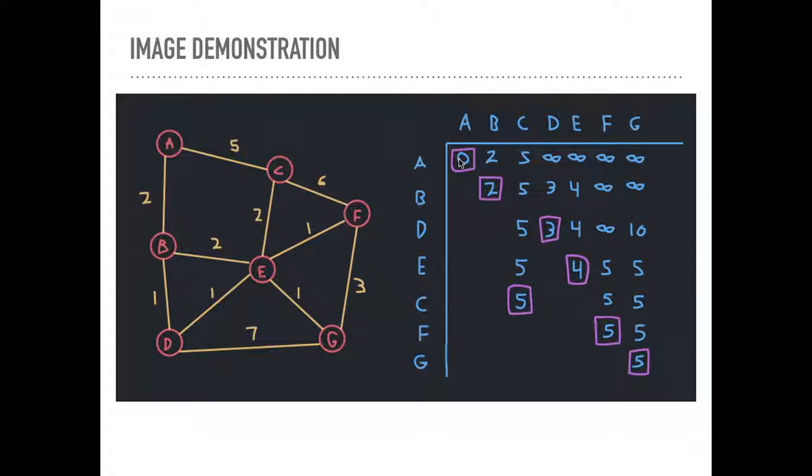So Dijkstra is going to use the greedy method. And it's going to assume that these local optimizations are global optimizations. So again, you'll understand more what I mean by that if you watch the Bellman Ford video where we compare it to Dijkstra's. So next, we're going to go A to B is 2. That's better than infinity. So we write 2. A to C is 5. That's better than infinity. We write 5. And now A is not immediately connected to D, E, F, or G. It's not immediately directly connected. So we can't say that we have a better path yet. So we'll just leave the defaults.